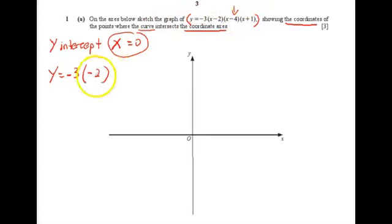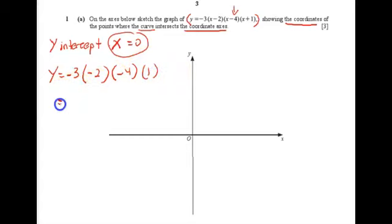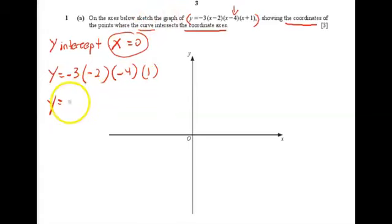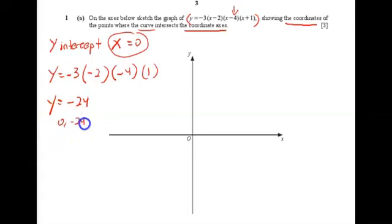Now we repeat the same thing for the other factor. Replace x with zero and you'll be getting negative four, and here will be one. When we multiply everything, you'll be getting eight, so the result is negative 24. Your y-intercept coordinate is (0, −24).